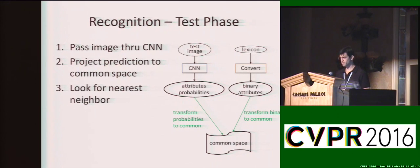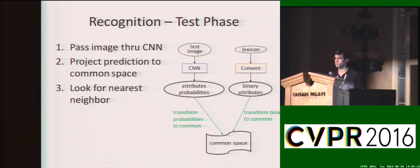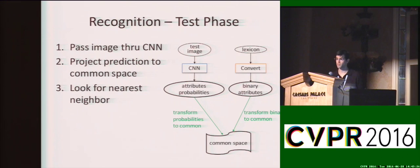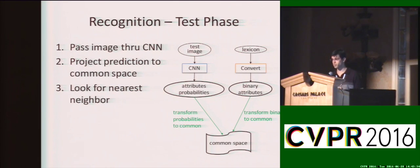During test, we take the entire lexicon and convert it into binary vectors and project it into the common space. Given a test image, we run the network on it, getting a probability vector, and project it into the common space. Then it's a simple matter of nearest neighbor search to find the predicted word in the projected lexicon space.